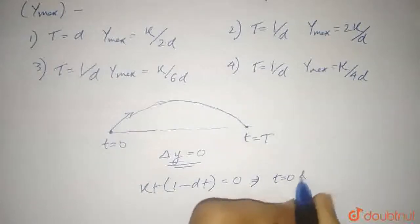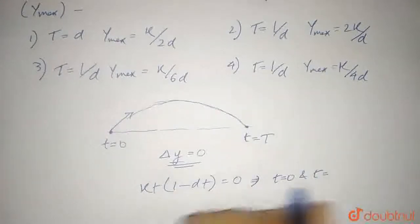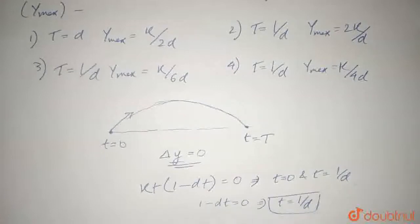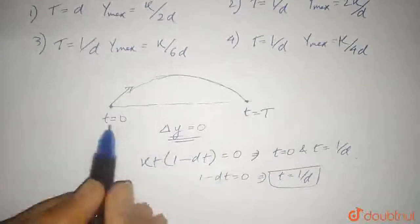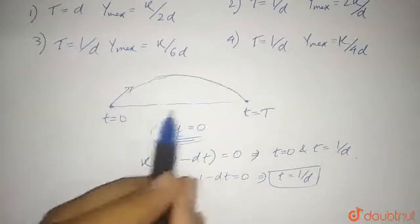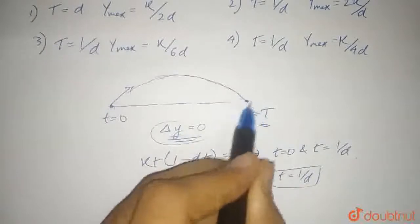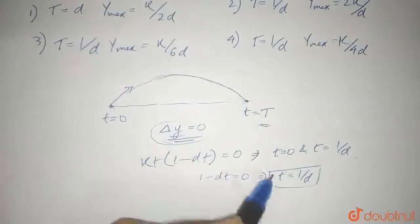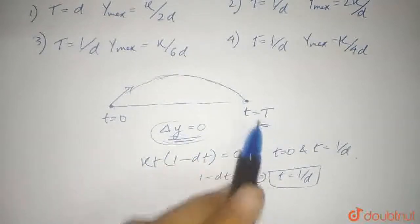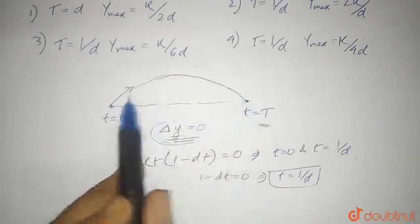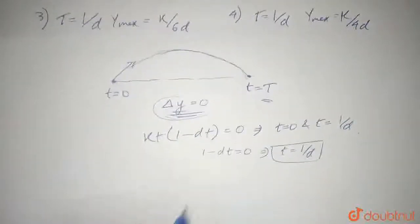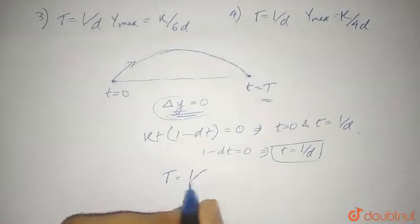Setting y = 0: kt(1 − αt) = 0, which gives t = 0 and t = 1/α. So the time of flight is T = 1/α. At t = 0 the displacement is 0, and at t = capital T the displacement in the y-direction is also 0. So the total time of flight is T = 1/α.